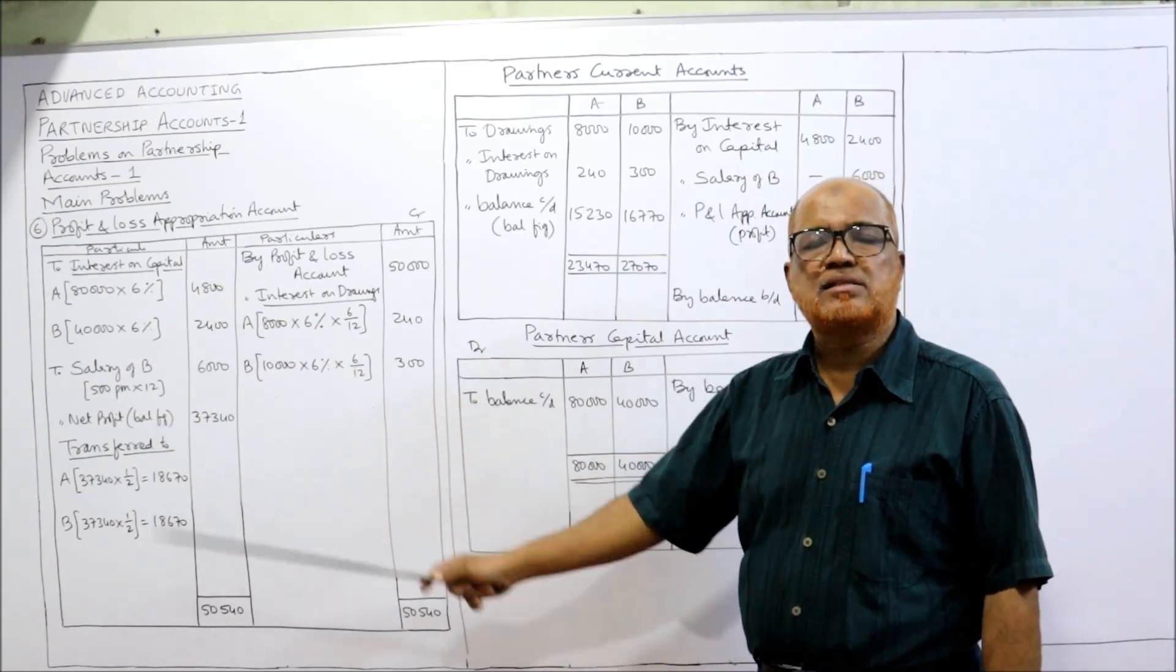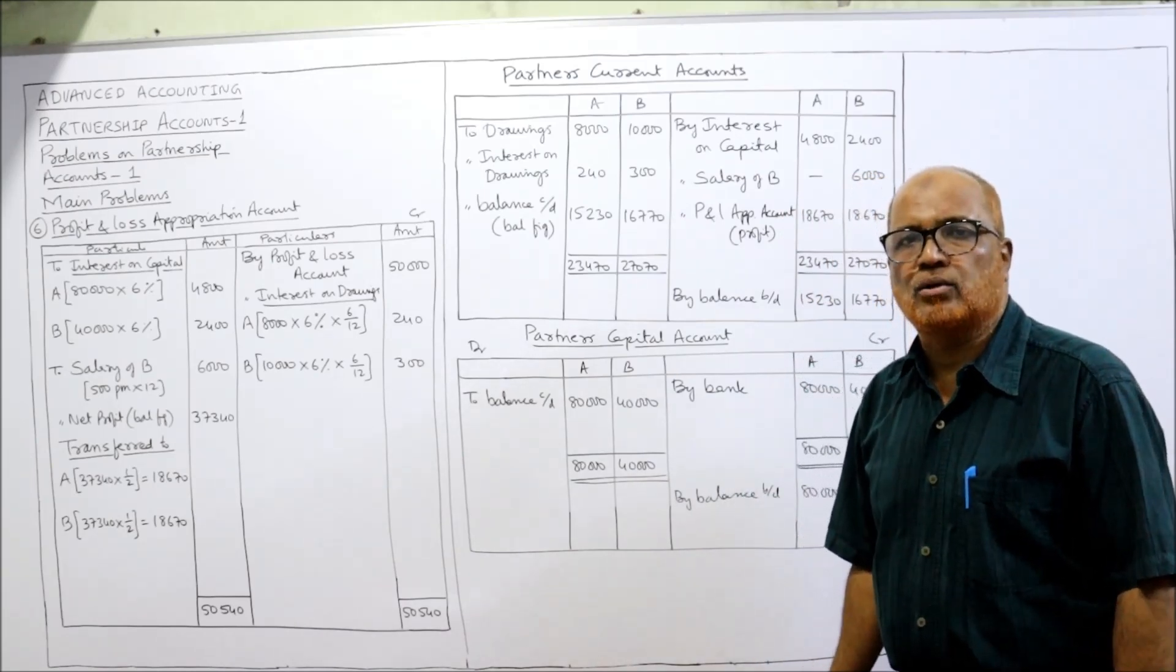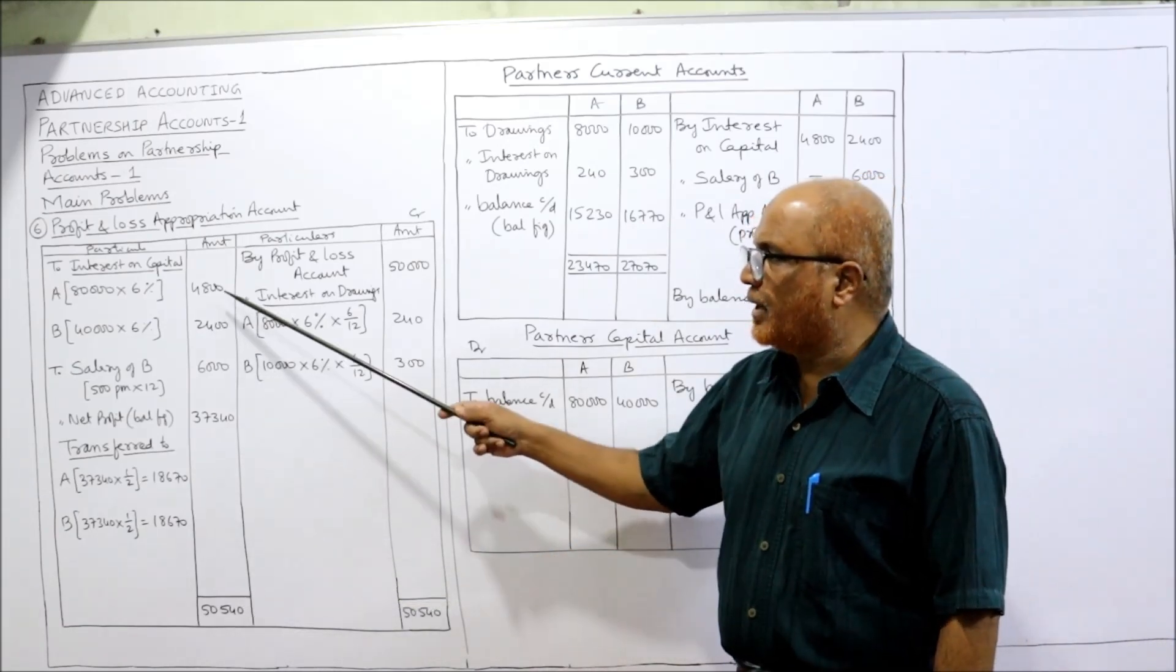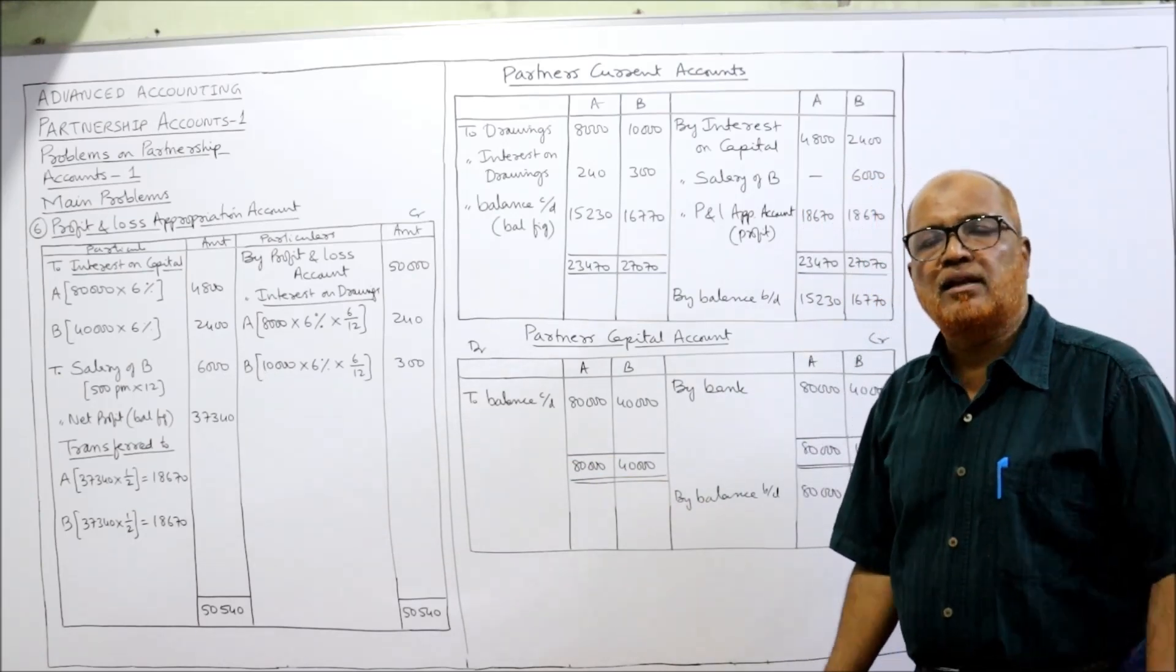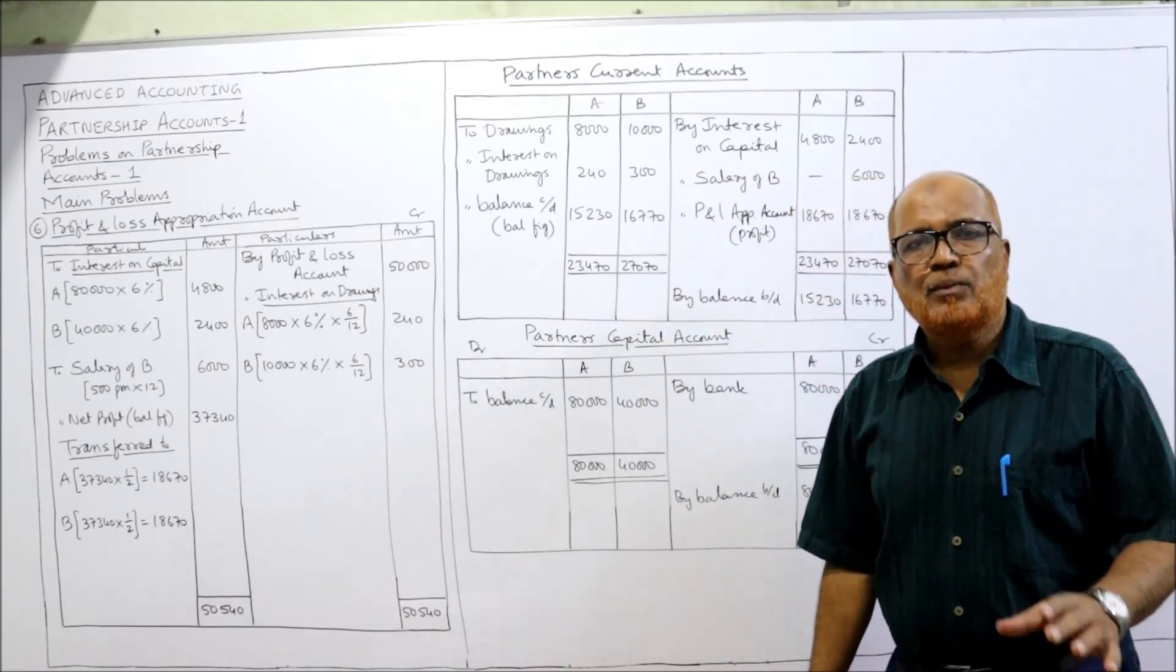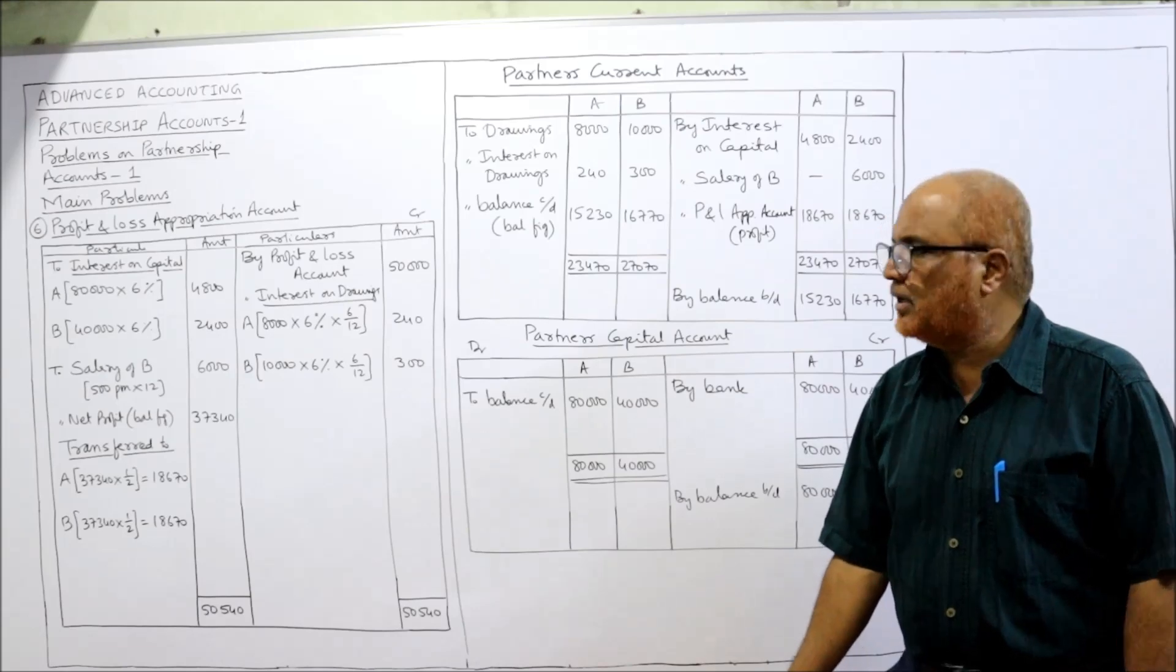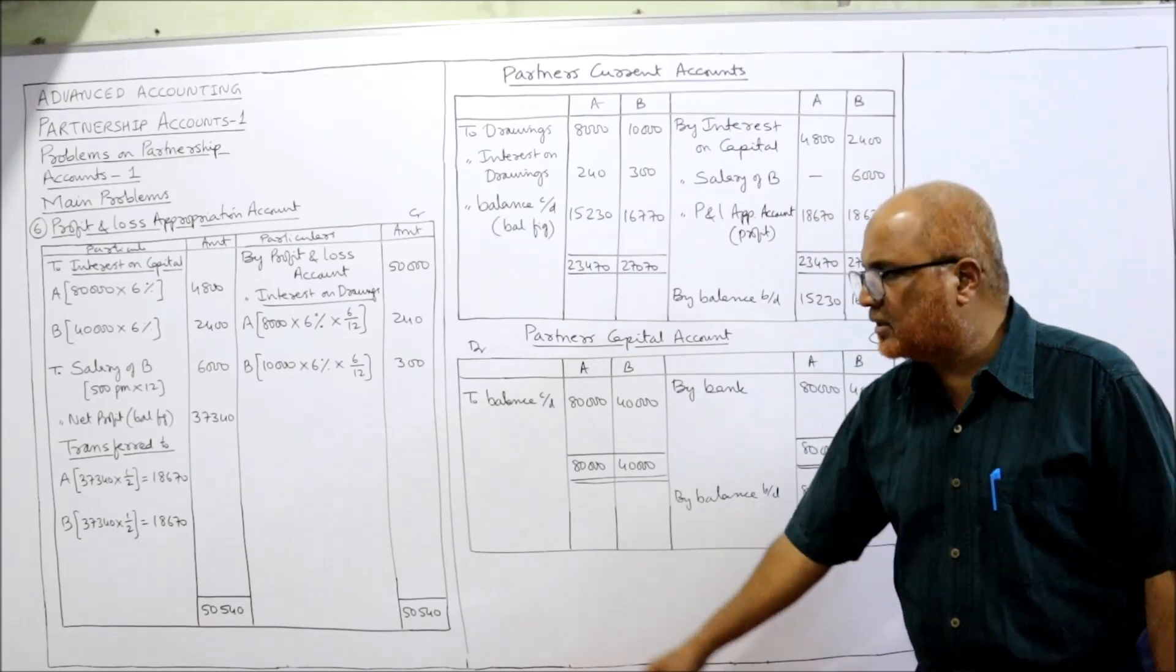These are the adjustments: interest on drawing, interest on capital, and salary to B. Now we find out the balancing figure in this appropriation account. Credit side: 50,000 plus 240 plus 300 is 50,540. From 50,540 minus 4,800 minus 2,400 minus 6,000, so the balancing figure, the net divisible profit is 37,340. In the problem it is given the profit sharing ratio is equal, half half. So 50% profit goes to A, 50% goes to B. So 37,340 into 1 by 2: 18,670 each partner will get.